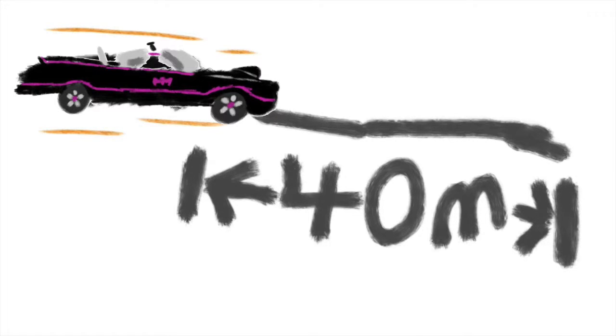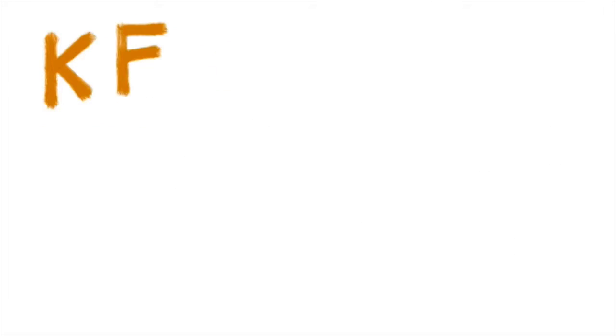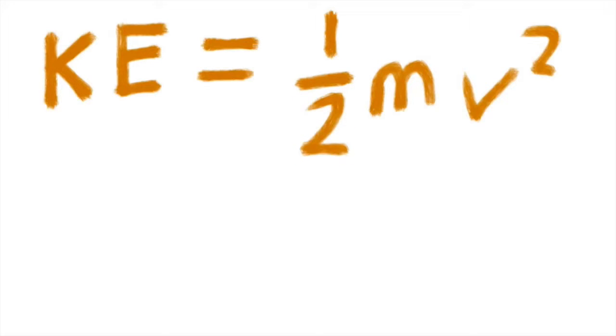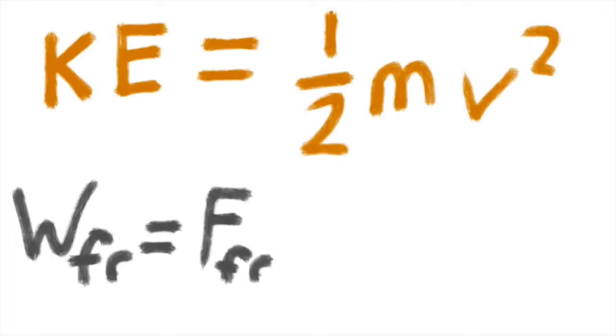we can see how we convert the kinetic energy, the translational kinetic energy, into the work done by friction. The kinetic energy is equal to one-half mv squared, one-half times the mass times the velocity squared.